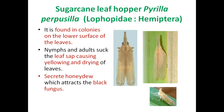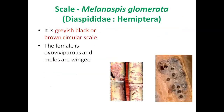Sugarcane scale, Melanaspis glomerata, belongs to family Diaspididae, order Hemiptera. This is the symptom of sugarcane scale — it covers the nodal and stem portions of sugarcane, sucks the sap, and causes shriveling and stinking of the nodal and stem portions of sugarcane.